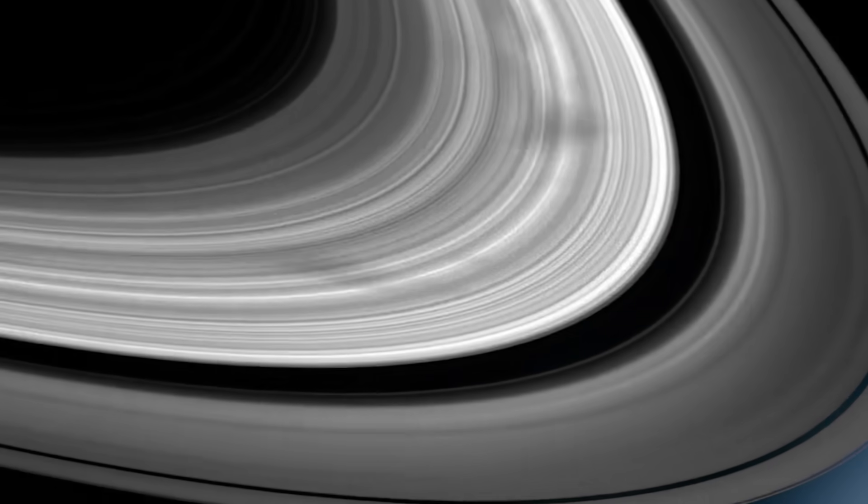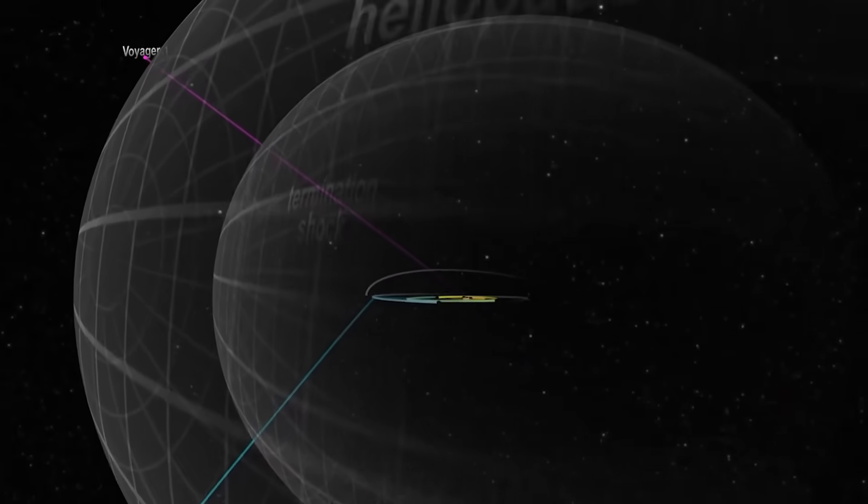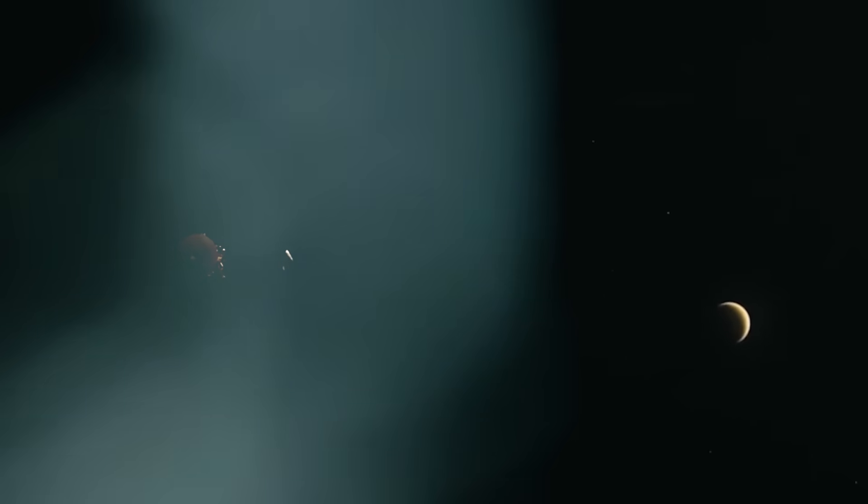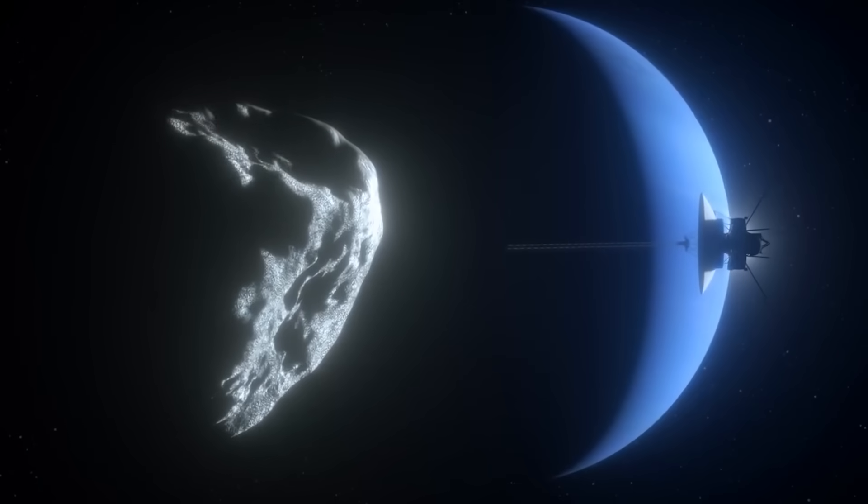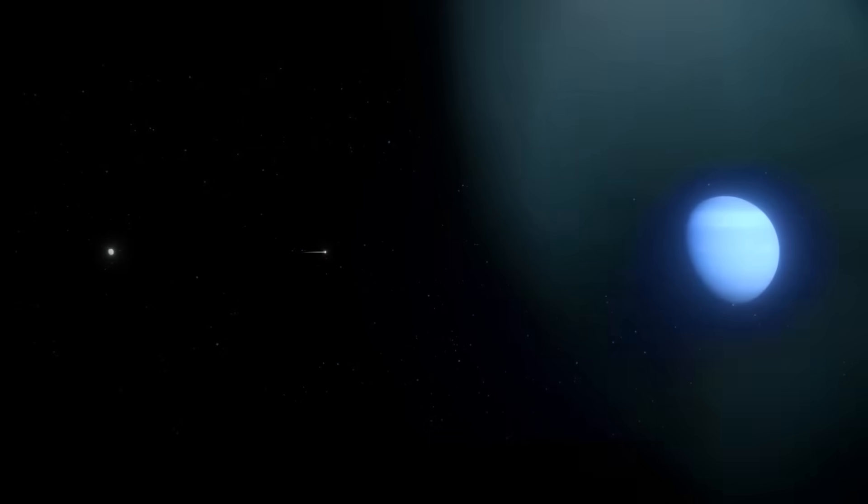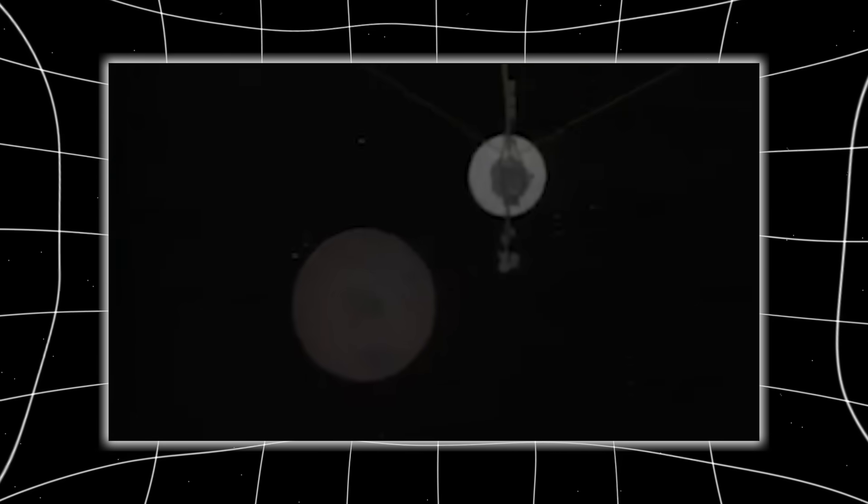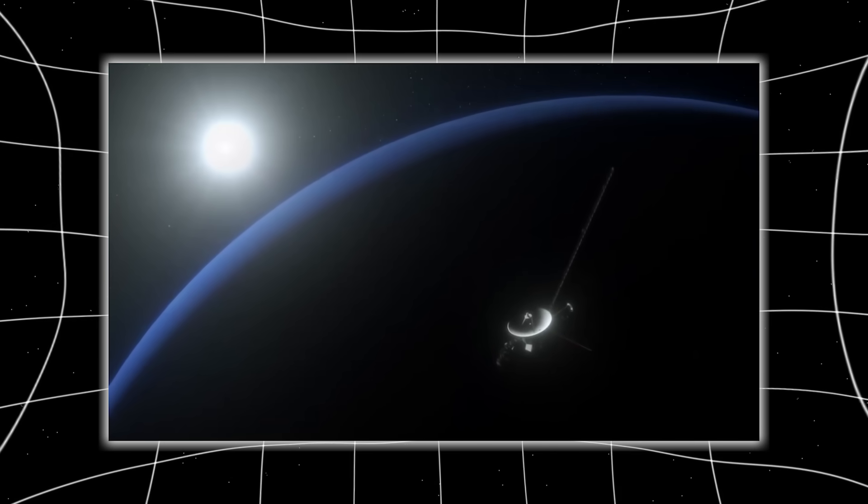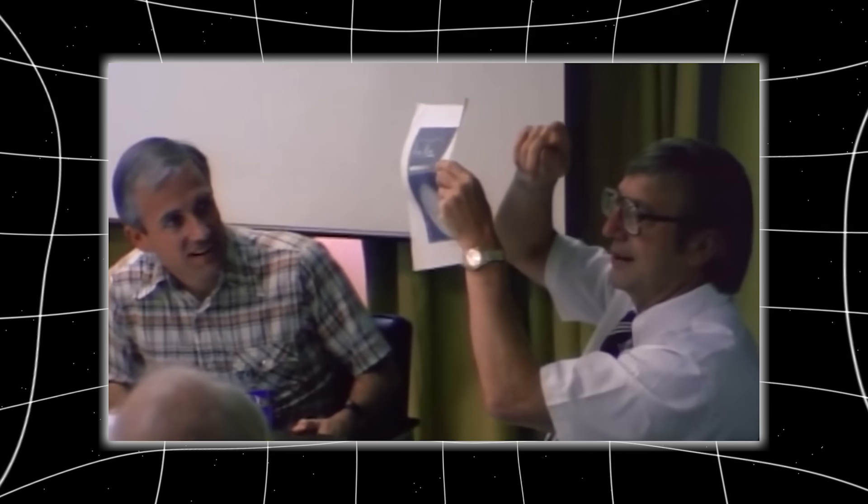When NASA sent the command to reactivate Voyager's long-dead camera system, a Hail Mary attempt to see what lay ahead, they expected silence. What they got was a response. The camera came online. Not just online, but functioning better than its specs allowed. And it didn't send a photo. It sent a spiral. Not a random swirl, but a mathematically perfect pattern. Layered, concentric, dense with information. A fingerprint. A map. A message. This image wasn't just strange. It was impossible for Voyager's 1970s hardware to create. The system hadn't just been reactivated. It had been reprogrammed.